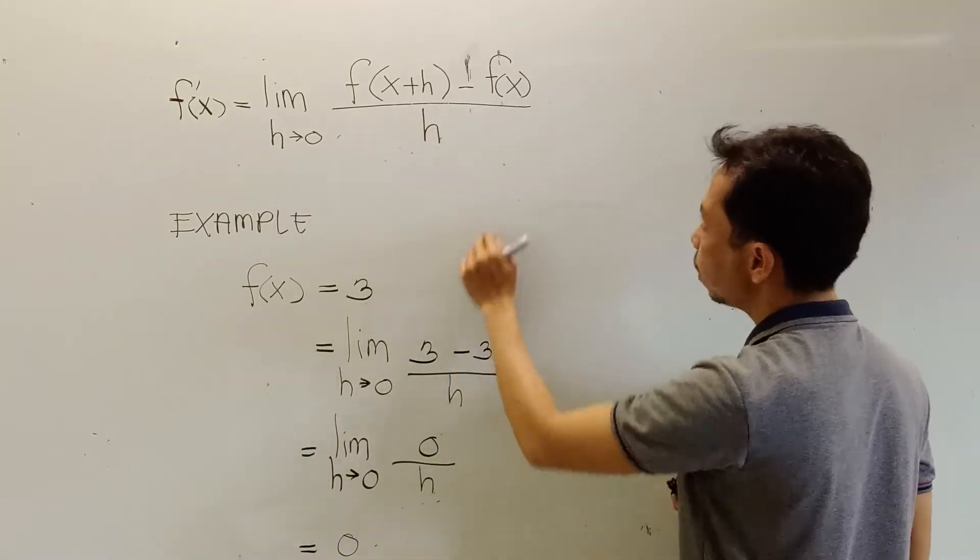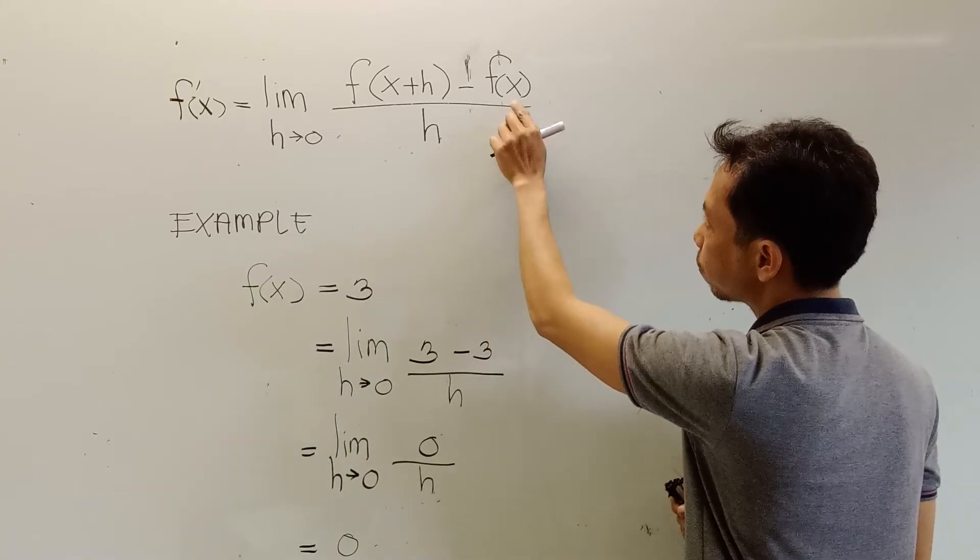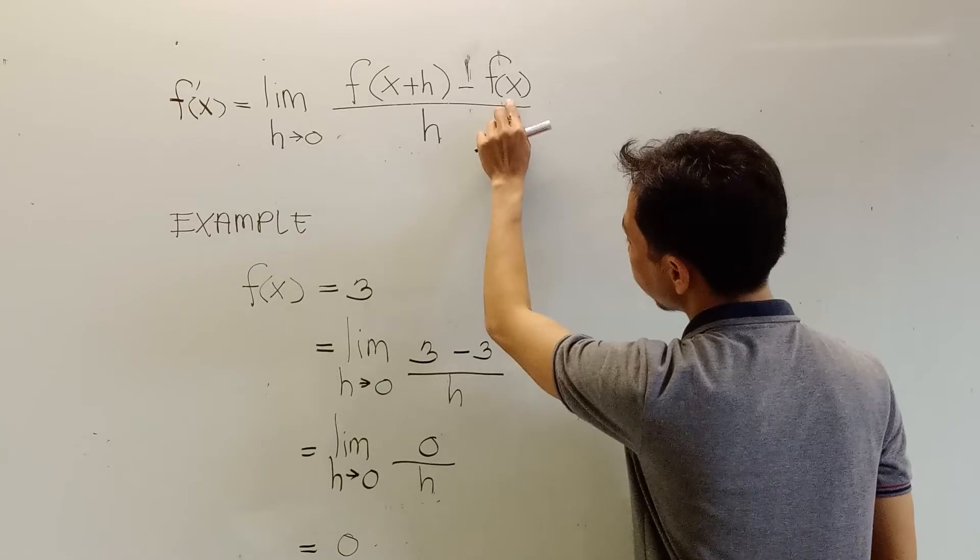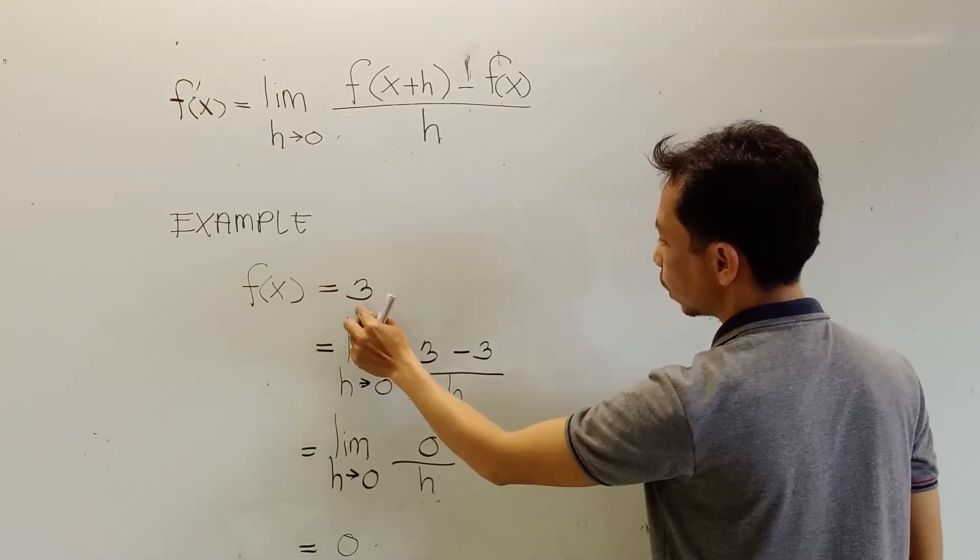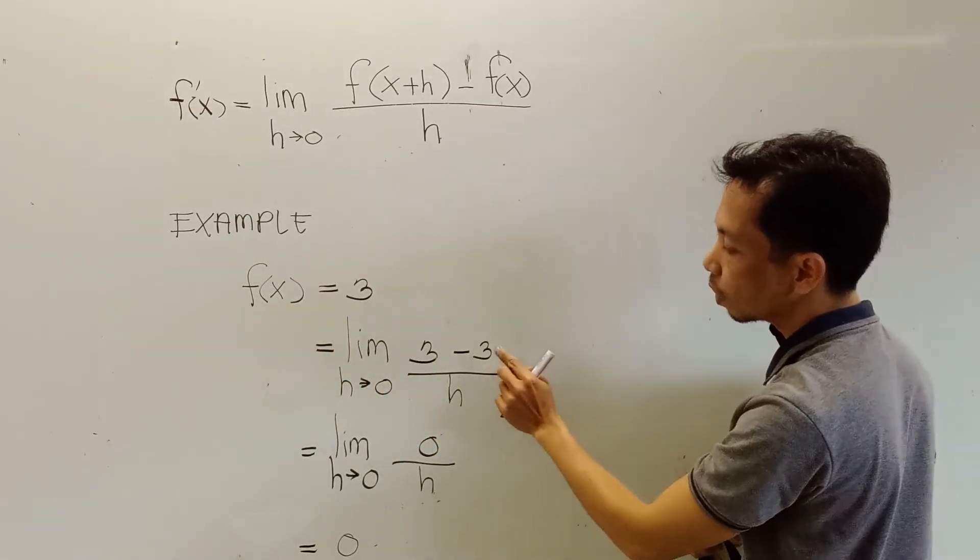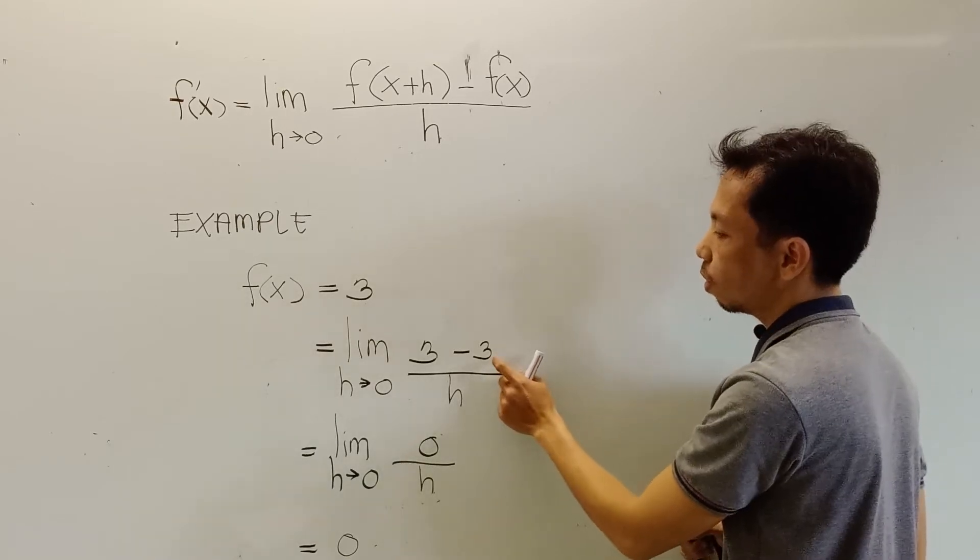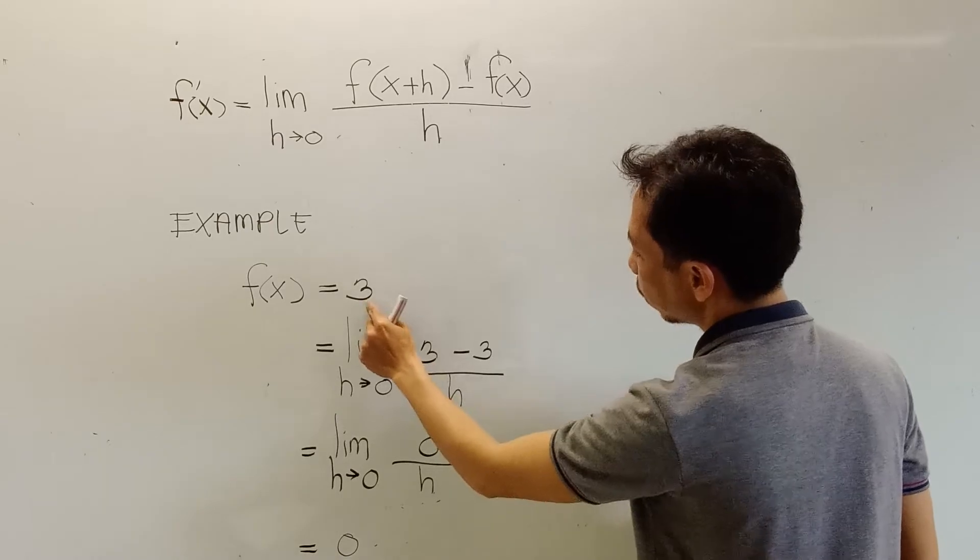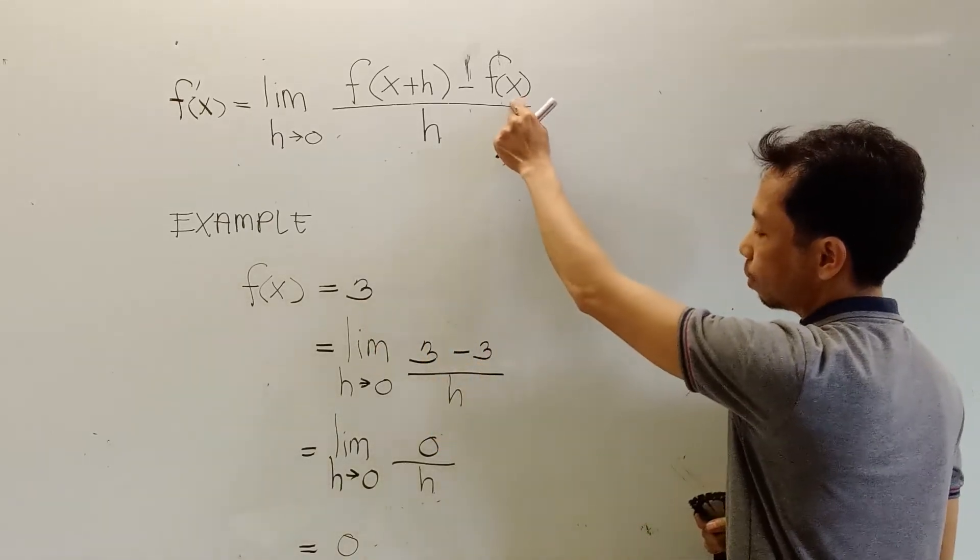subtracted with the value of your function. What is the value of your function? Alright, it is here, 3. The value of f(x), f(x) equals 3. That is why you have also 3 in this side. Okay, this 3 is from this one and this 3 is from this one.